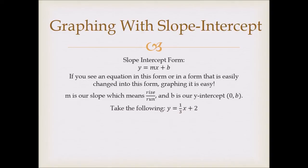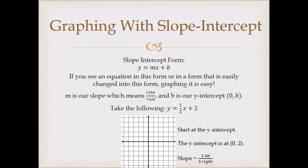So let's take our example: y equals 1 3rd x plus 2. So first, let's label these. So the y-intercept is at 0, 2. And then our slope is at 1 3rd. So we're going to start at 0, 2. And that's right there.